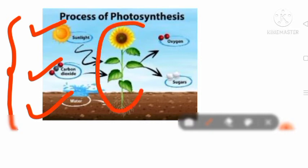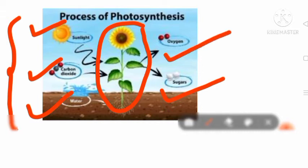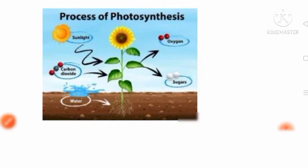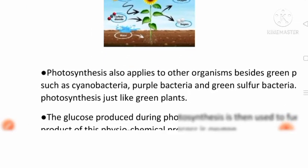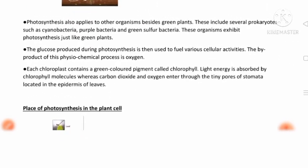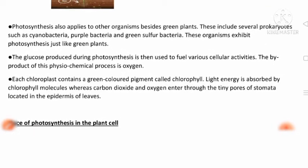The plant uses CO2, water, and sunlight, and the products are sugar and oxygen gas, which is liberated. This is the complete process of photosynthesis. I will now explain some important points related to photosynthesis.